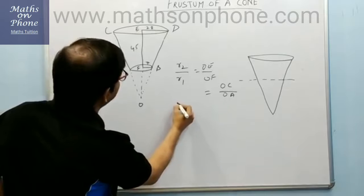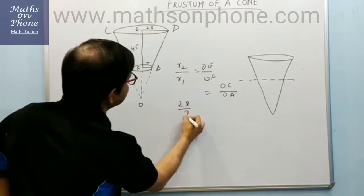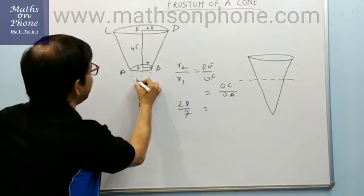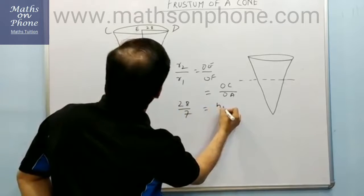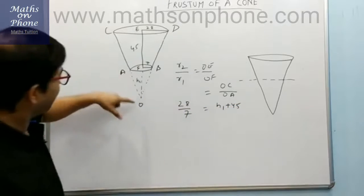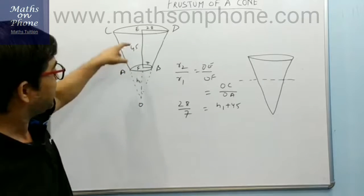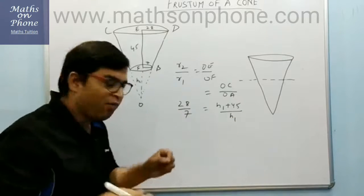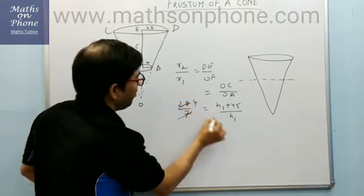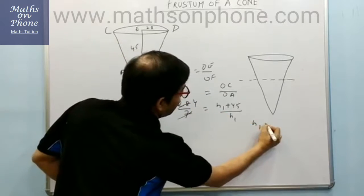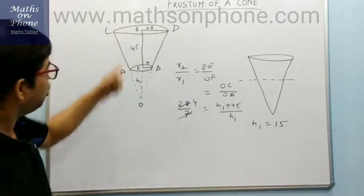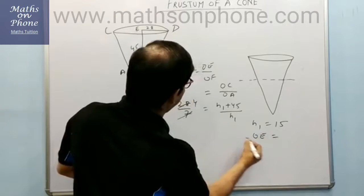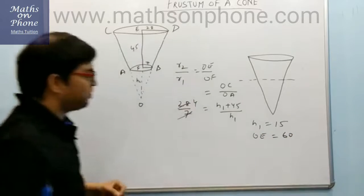Putting in the data: 28/7 = (H1 + 45)/H1, because we need the total height. Simplifying, 4 = (H1 + 45)/H1, which gives H1 = 15. So the height of the bigger cone, H2, is H1 + 45 = 15 + 45 = 60.